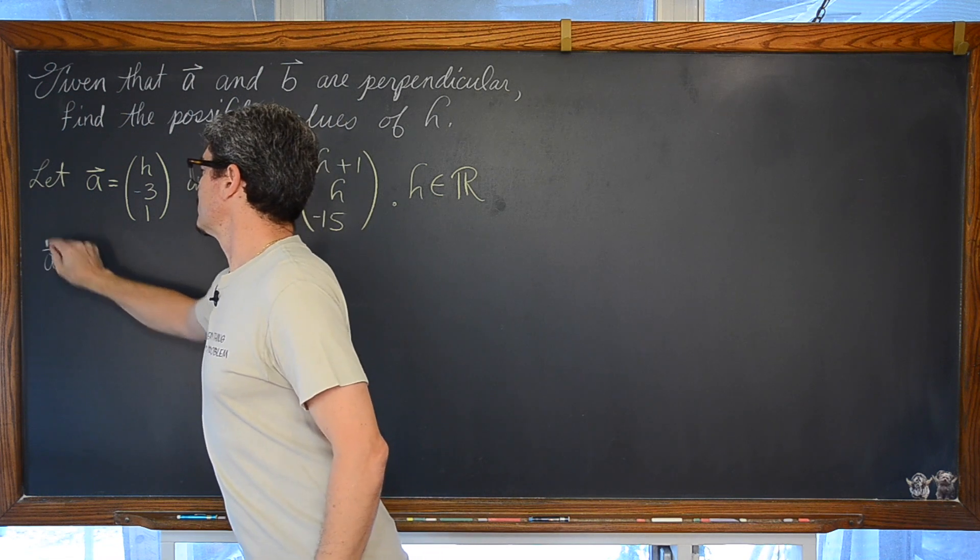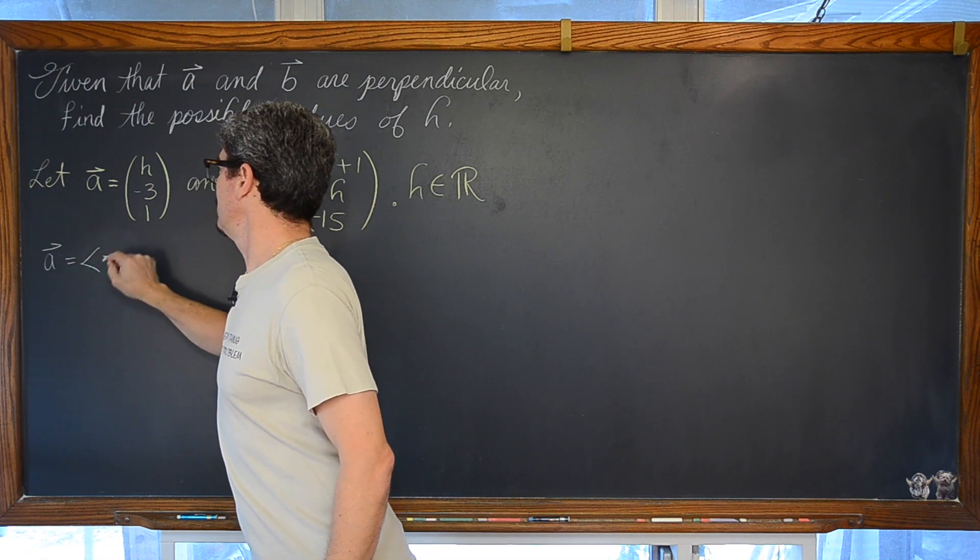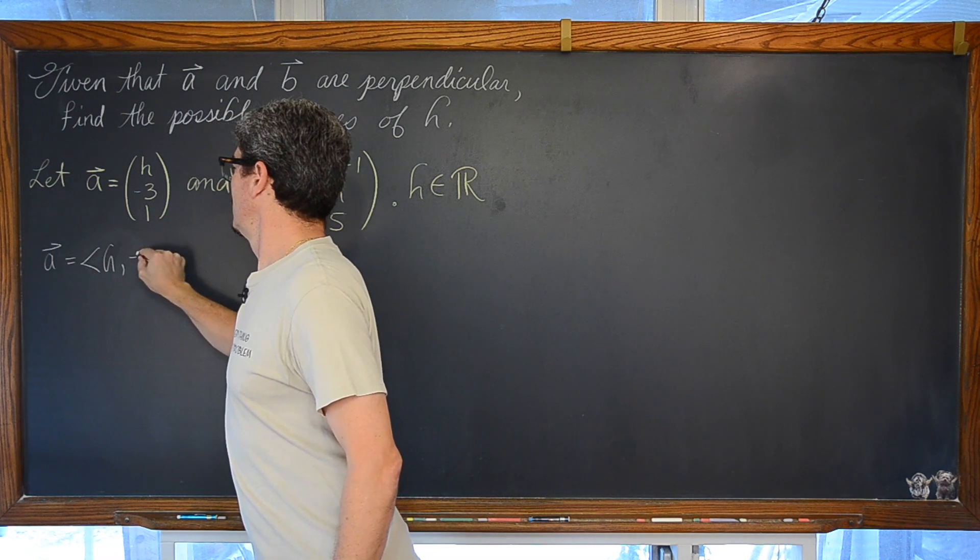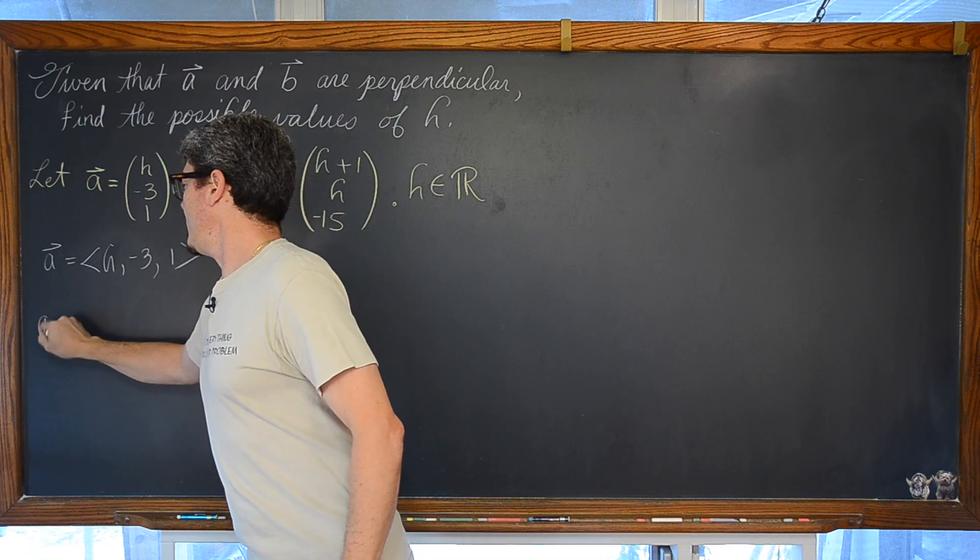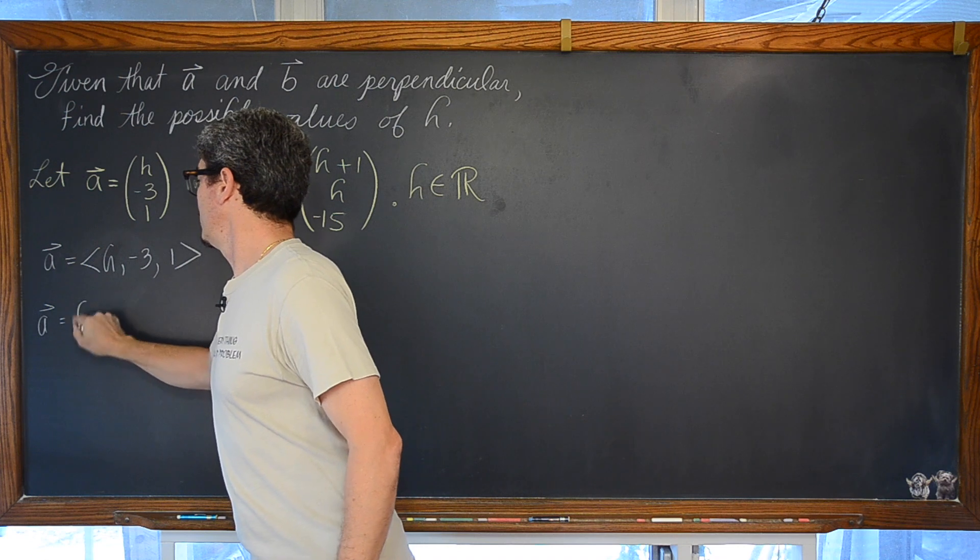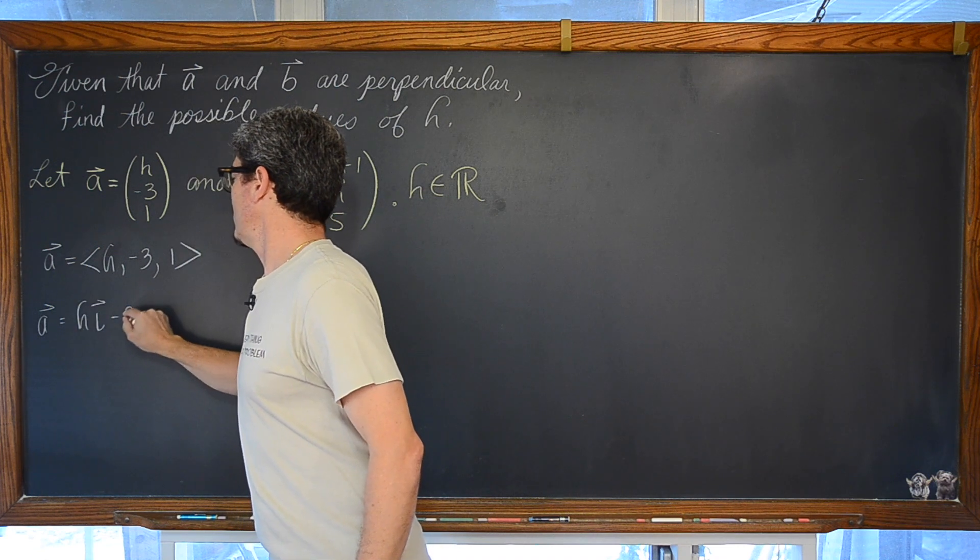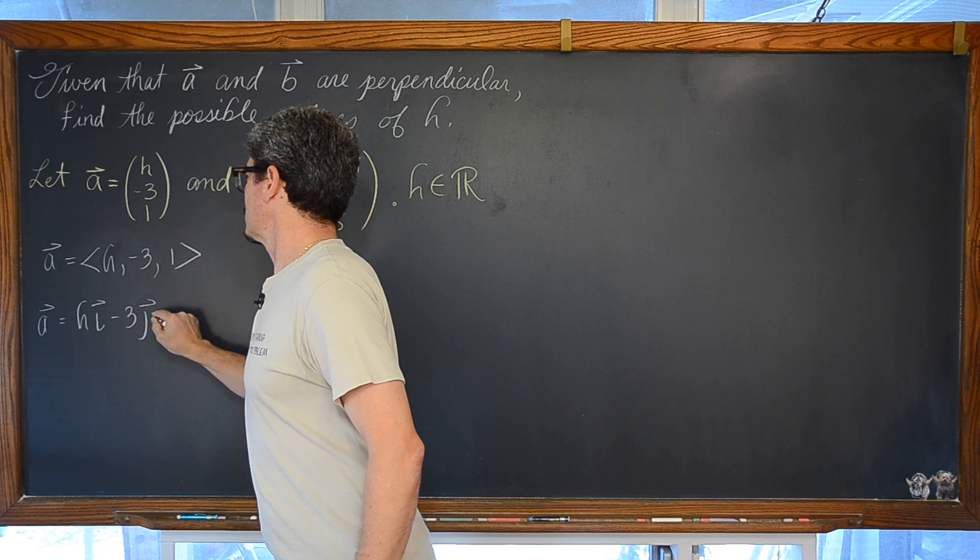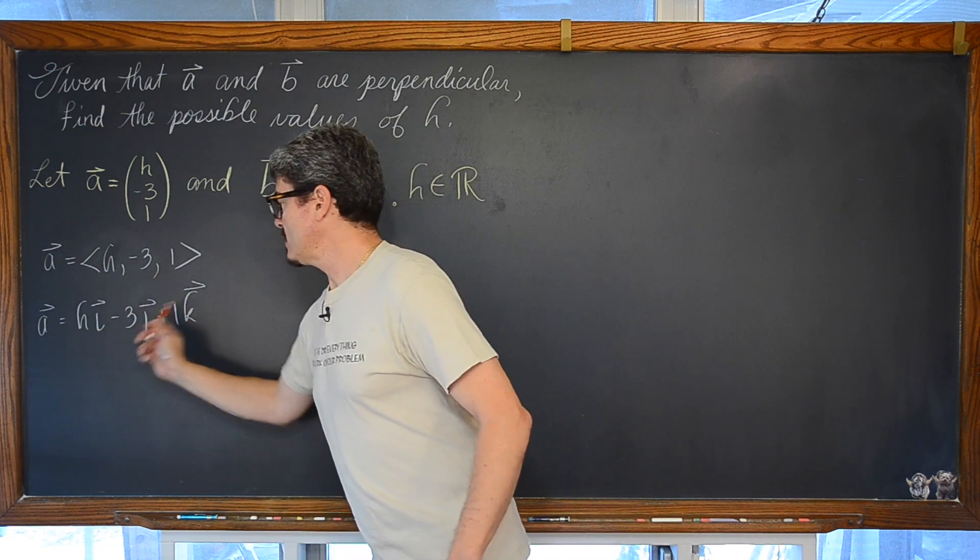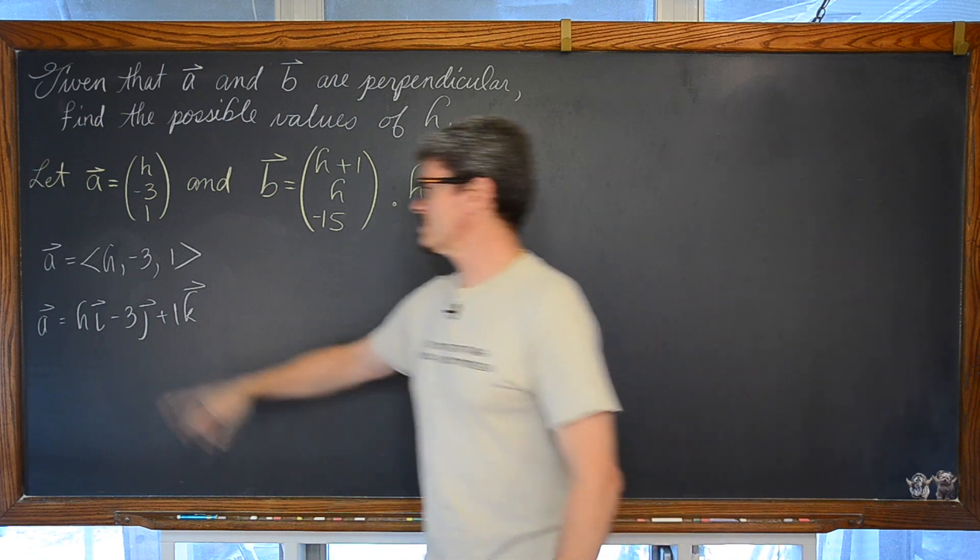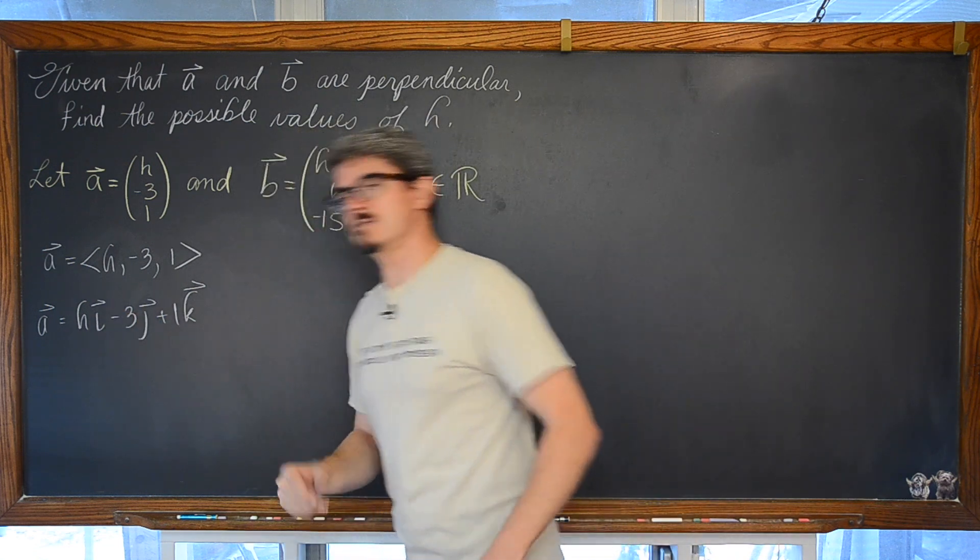You may see this as vector A is equal to H, -3, and 1. Or that A is equal to H times vector I minus 3 times vector J plus 1 times vector K. Where I, J, and K are those component vectors in the direction of the X, Y, and Z axis.